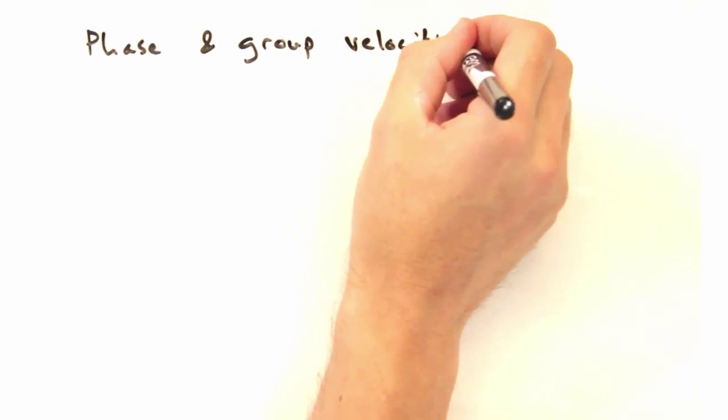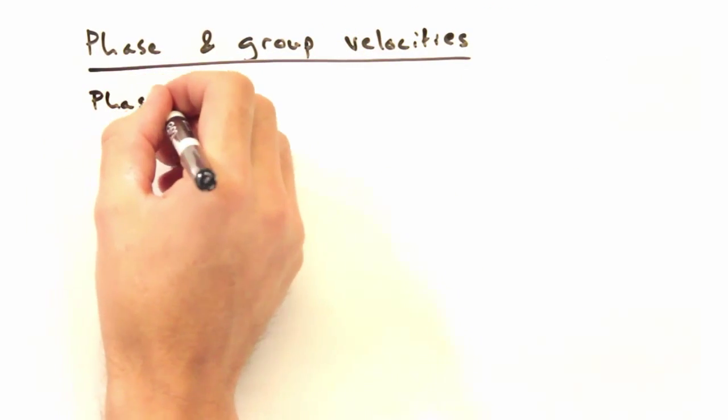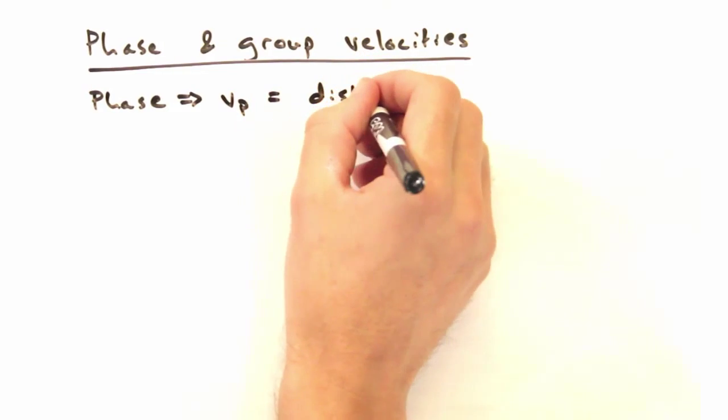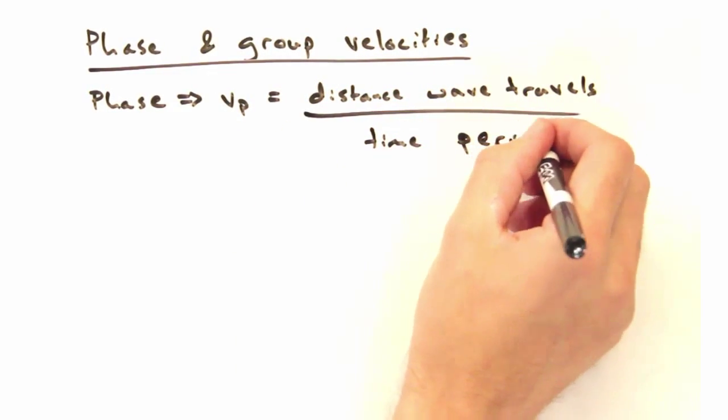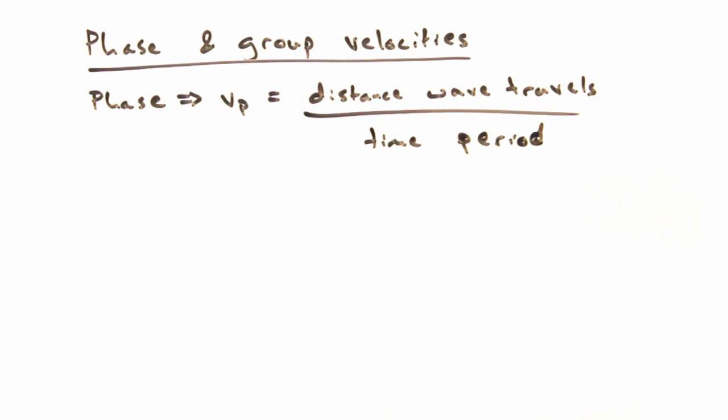And this brings us to part 2 of today's screencast, finding phase and group velocities from our dispersion. Well, what's the difference between the two? Let's consider the phase velocity first, which is the distance the phase of the wave moves over a given amount of time.